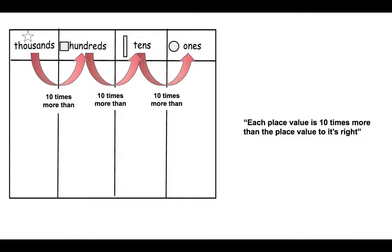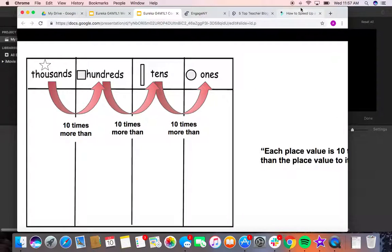So what we can see is anytime you're comparing place values, the place value is always worth 10 times more than the place value to its right. This can help us understand that three hundreds is 10 times more than three tens, or that two tens is 10 times more than two ones. Understanding this relationship will help us solve a lot of math problems. That's all for today. Stay tuned for next time.